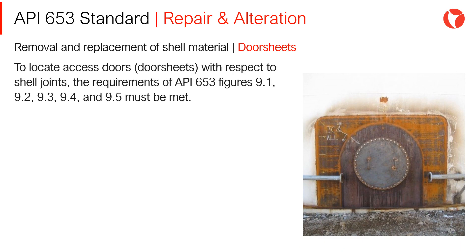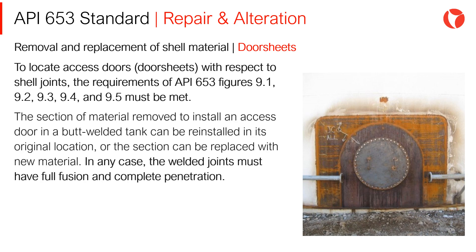Door sheets: to locate access doors with respect to shell joints, the requirements of API 653 figures 9.1, 9.2, 9.3, 9.4, and 9.5 must be met. The section of material removed to install an access door in a pad-welded tank can be reinstalled in its original location, or the section can be replaced with new material. In any case, the welded joints must have full fusion and complete penetration.